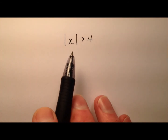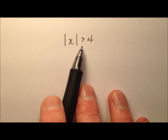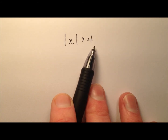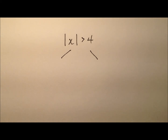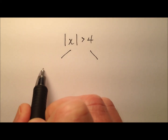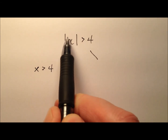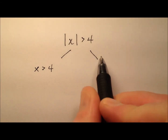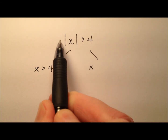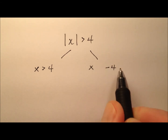So let's go ahead and look at our first example. We have the absolute value of x is greater than 4. What this is going to look like is we're going to break this into two separate inequalities. It's going to be x is greater than 4 — we found that one just by taking the absolute value bars away. And then we're going to do the negative side as well.